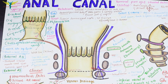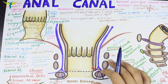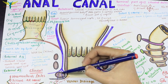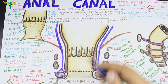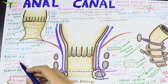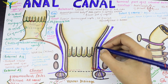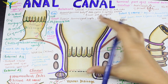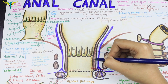The anal canal contains two sphincters: the internal anal sphincter and the external anal sphincter. The internal anal sphincter is formed by the thickened circular muscle coat of the anal canal and surrounds the upper two-thirds of the anal canal, as seen in the diagram.